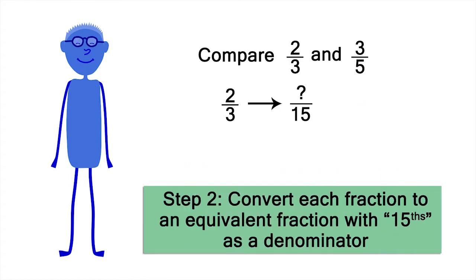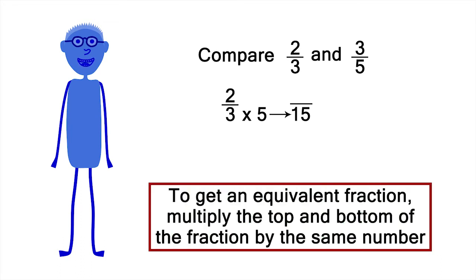Let's convert two-thirds to an equivalent fraction that has fifteenths as the denominator. What do you have to multiply three by to get fifteen? Five. To make an equivalent fraction, whatever you multiply the bottom half of a fraction by, you also have to multiply the top half of the fraction by. Two times five is ten. So, two-thirds and ten-fifteenths are equivalent fractions.